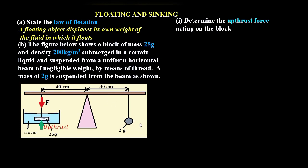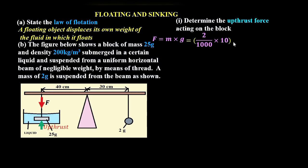First, let's determine the force due to the 2-gram mass. Force equals mass times gravity, so we calculate the weight: 2 grams converted to kilograms is divided by 1000, then multiplied by the gravitational field strength of 10, giving us 0.02 newtons.